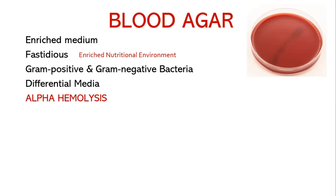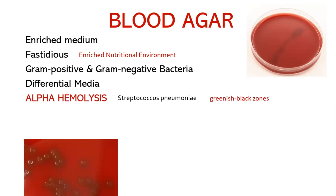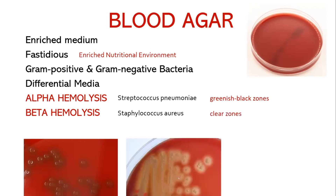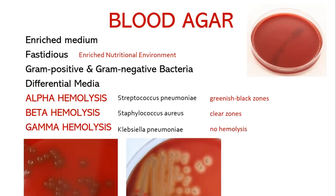Bacteria showing alpha hemolysis, such as Streptococcus pneumoniae, produce greenish-black zones around the colonies. Bacteria showing beta hemolysis, such as Staph aureus, produce clear zones around the colonies. Bacteria showing gamma hemolysis include Klebsiella pneumoniae and Enterococcus faecalis, and these show no hemolysis.